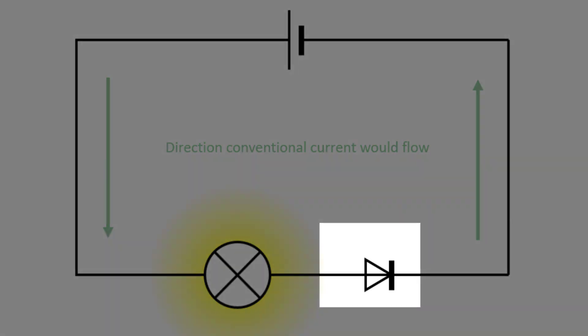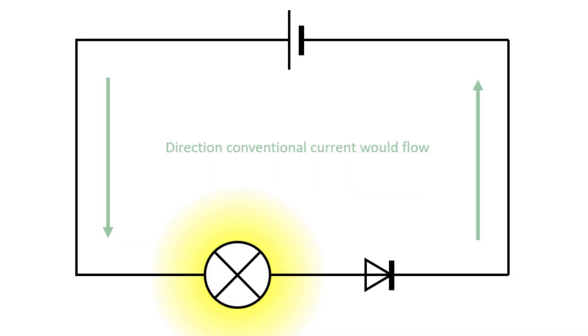This is the symbol for a diode. The arrow points in the direction that conventional current is allowed to flow. Remember, that's in the sense positive to negative.